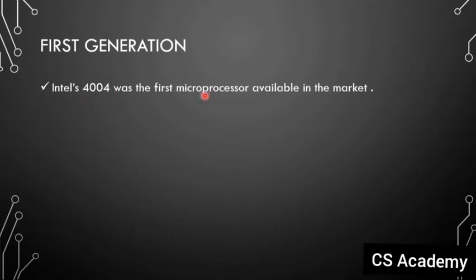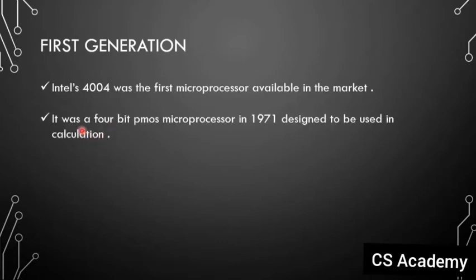Let's start with the first generation. Intel 4004 was the first microprocessor available in the market. Intel's 4004 is the first name in the market — this is the first microprocessor available.